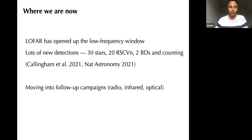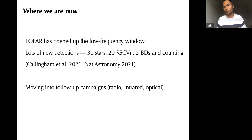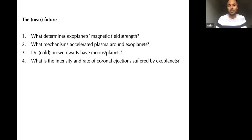Wrapping up: we've really opened up the low-frequency window where exciting signals from extrasolar systems will appear. We have many detections — around 30 stars, 20 RS CVn systems (close binary stars), two brown dwarfs and counting. We're moving into follow-up campaigns: finding periodicities, and pushing the second branch — finding stellar bursts and coronal mass ejections from other stars.